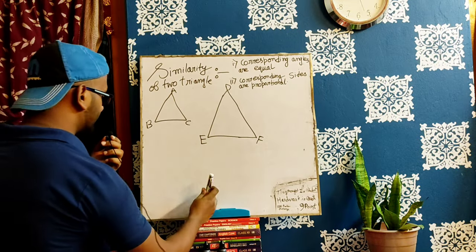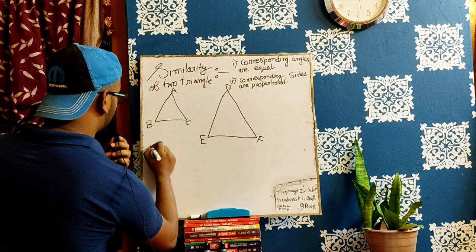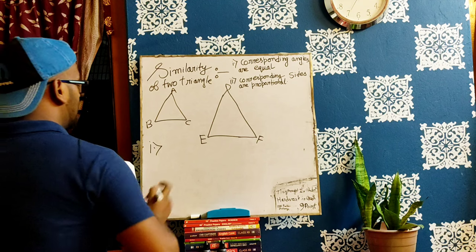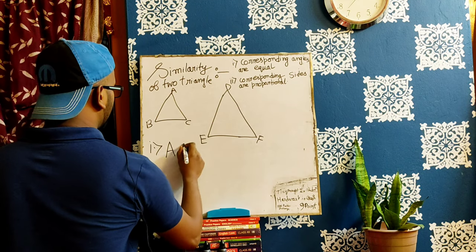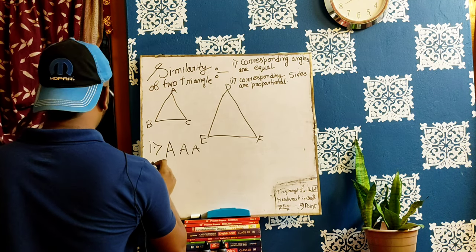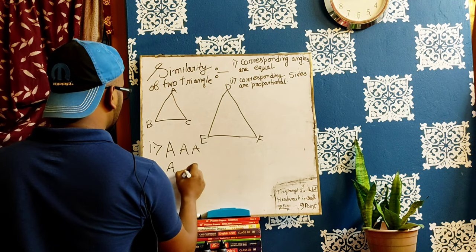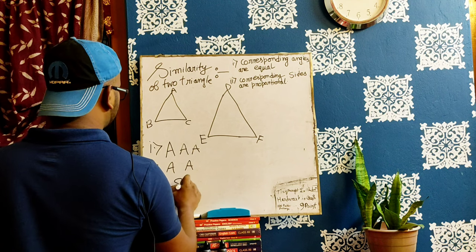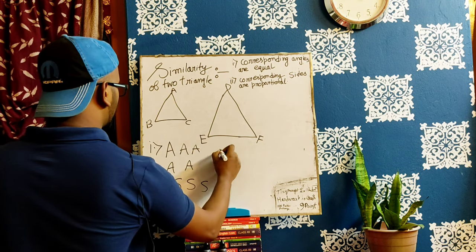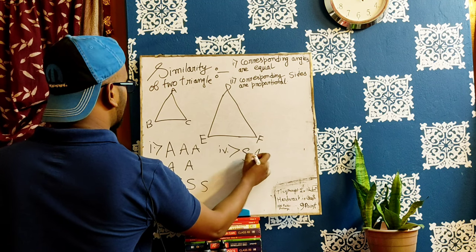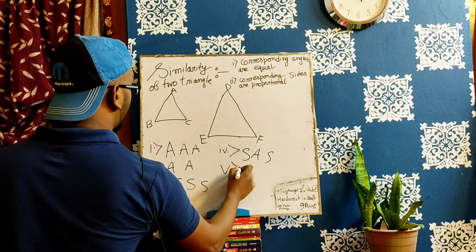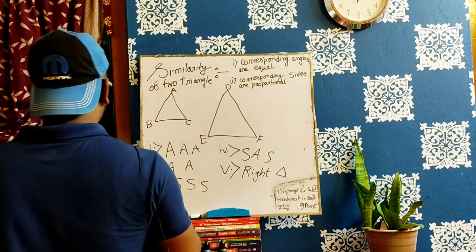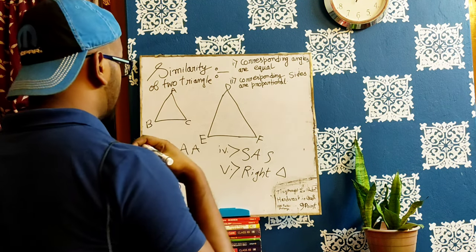Similarity has specific cases or criteria. Point number one is angle-angle-angle (AAA). Point number two is angle-angle (AA). Point number three is side-side-side (SSS). Point number four is side-angle-side (SAS). Point number five involves the right triangle.